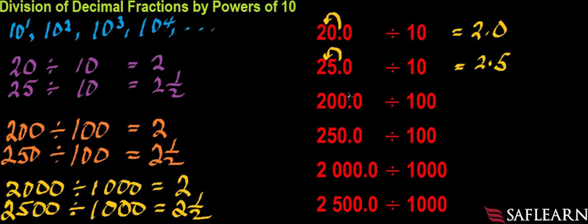So, we move the decimal point from here. 1, 2. And then we have 2.0, or if you like, 2.00. And then, in this case, again, dividing by 100, we move the decimal point from here 1, 2 spaces to the left. And then, we have 2.50.